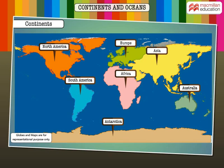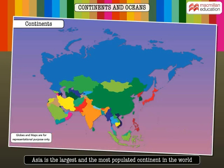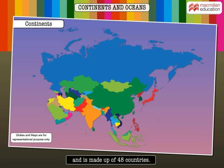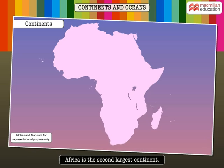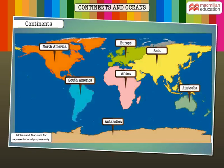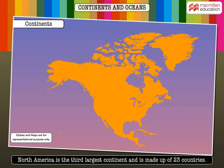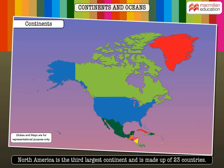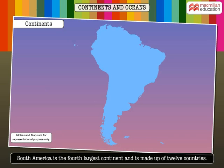The continents are further divided into countries. Asia is the largest and the most populated continent in the world and is made up of 48 countries. Africa is the second largest continent and has the most number of countries — 54. North America is the third largest continent and is made up of 23 countries.